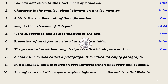8. A blank line is also called a paragraph. It is called an empty paragraph. True. 9. In a database, data is stored in spreadsheets which have rows and columns. False – data is stored in Access or Base tables, not spreadsheets.